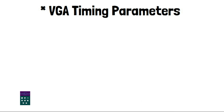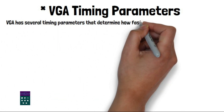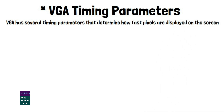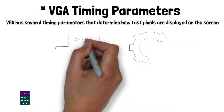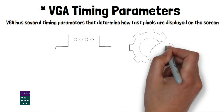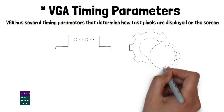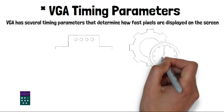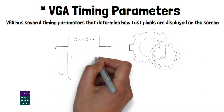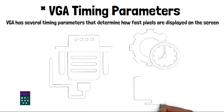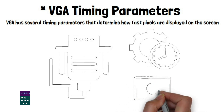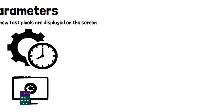VGA has several timing parameters that determine how fast pixels are displayed on the screen. These parameters include the pixel clock, horizontal total, horizontal sync width, vertical total, and vertical sync width. Each parameter plays a role in defining the refresh rate, resolution, and overall performance of the display. Setting the proper timing parameters is crucial because if they're not correctly configured, you might experience flickering, ghosting, or even a completely unreadable display. So whether you're a gamer, a designer, or just someone who enjoys binge-watching shows, understanding VGA timing parameters is essential for a smooth visual experience.